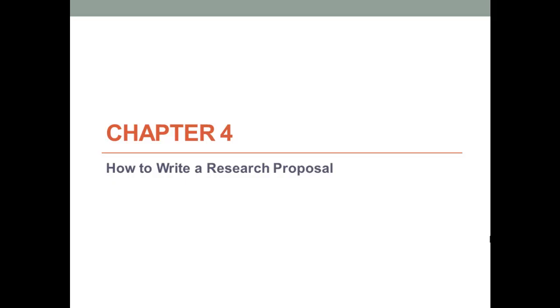This lecture will cover Chapters 4 and 5 in Johnson & Christensen. Chapter 4 introduces the sections of a research proposal and provides details pertaining to the writing of research proposals. Chapter 5 is concerned with the myriad aspects of research ethics, including how to submit your proposal for review to the Institutional Review Board. Let's begin by examining the framework of a research proposal.